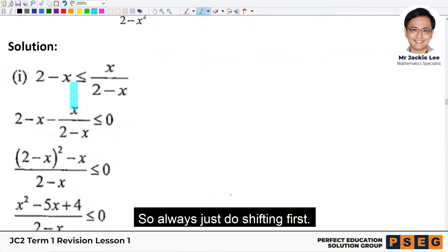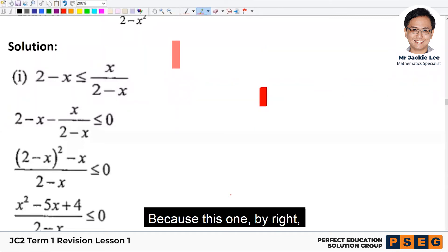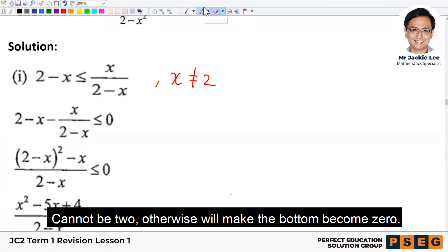So always start by shifting first. In fact, the given marking scheme, I feel that actually can improve a bit more. Because this one, if I write, we can mention that x cannot be 2 first. And quite often later the answer may contain this. Cannot be 2. Otherwise it will make the bottom become 0. So to highlight.